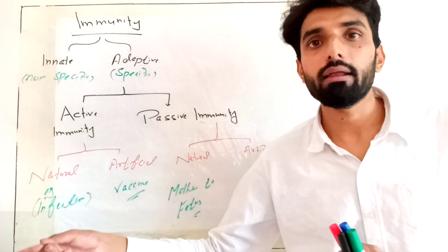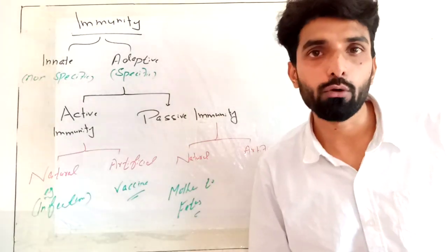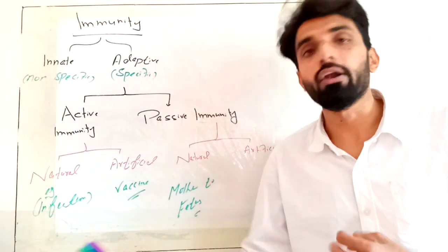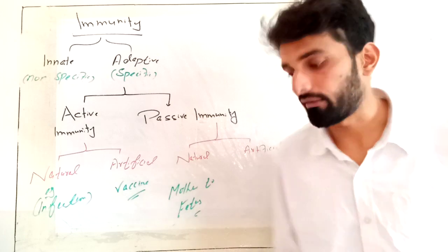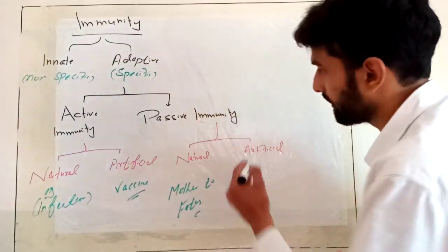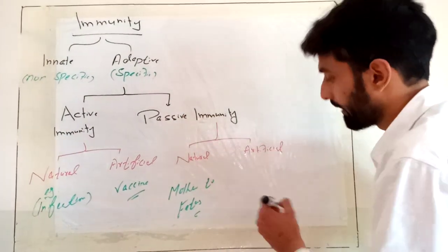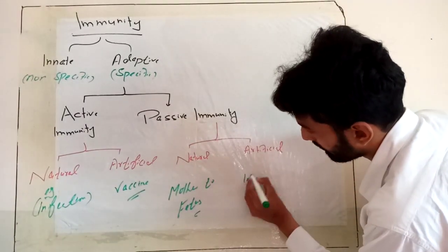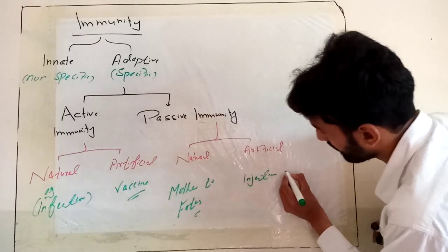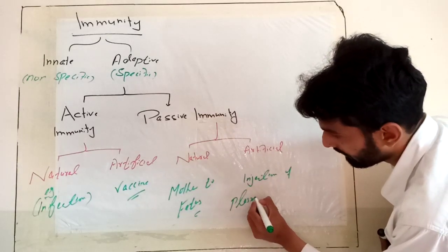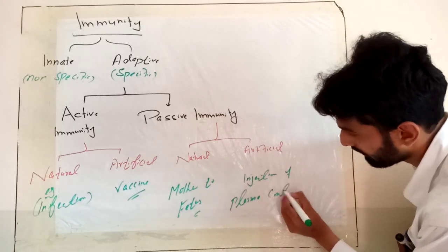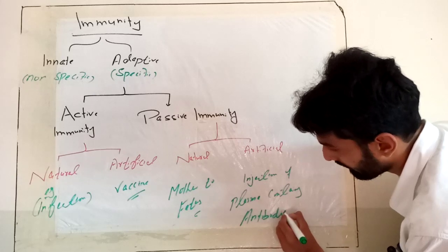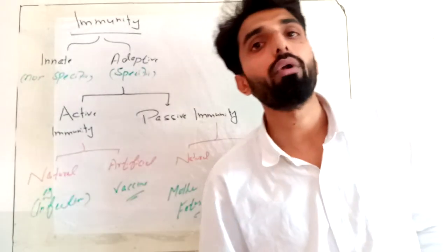The person receiving the plasma is not making antibodies by itself — its immune system is not producing them. And the plasma is artificially separated and then injected, so it is not a natural process. Therefore, this type of immunization is called artificial passive immunity — specifically, injection of plasma containing antibodies. These are the four types of adaptive immunity.